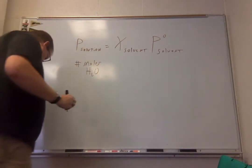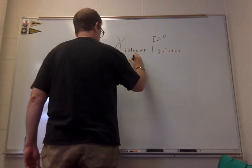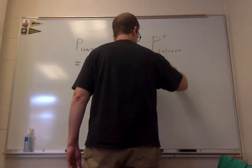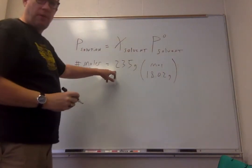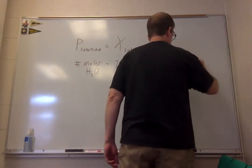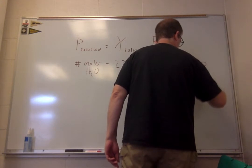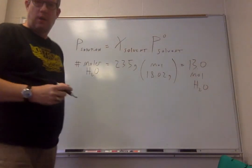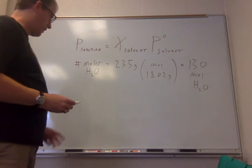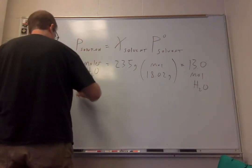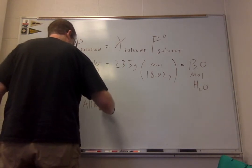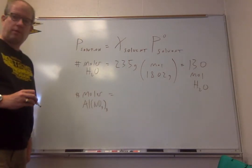So first we'll get the number of moles of water. We have 235 grams of water, molecular mass is 18.02, and so that's 13.0 moles of water. And so, the next step then is the number of moles of aluminum nitrate.